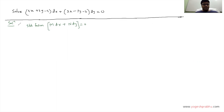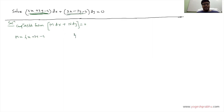You have to compare with the standard form. You will get M as the coefficient of dx, so M is equal to 4x + 3y − 4. Comparing the N dy term, you get N equal to 3x − 7y − 3.